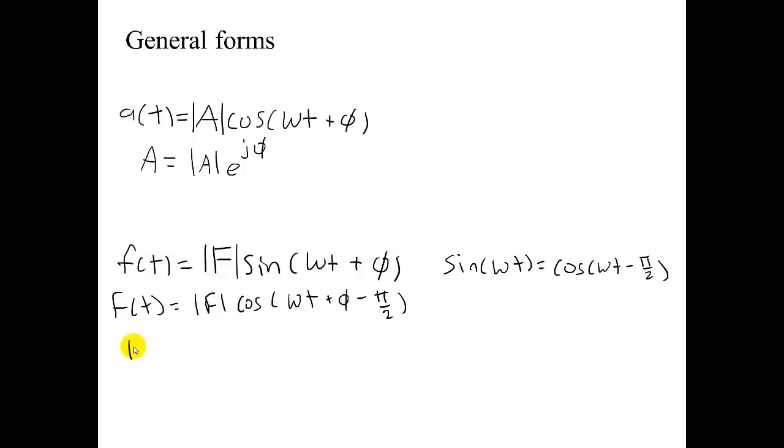Now I can write this in phasor form as magnitude of F times e to the j phi minus pi over 2. I can also write this as minus j times the magnitude of F times e to the j phi.